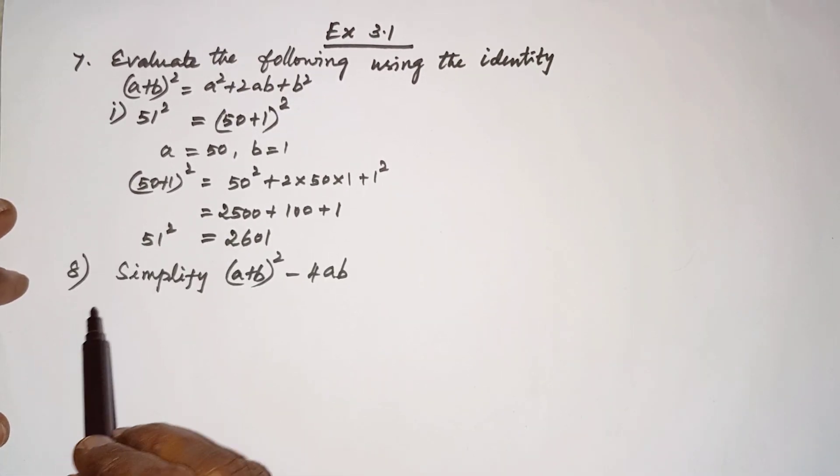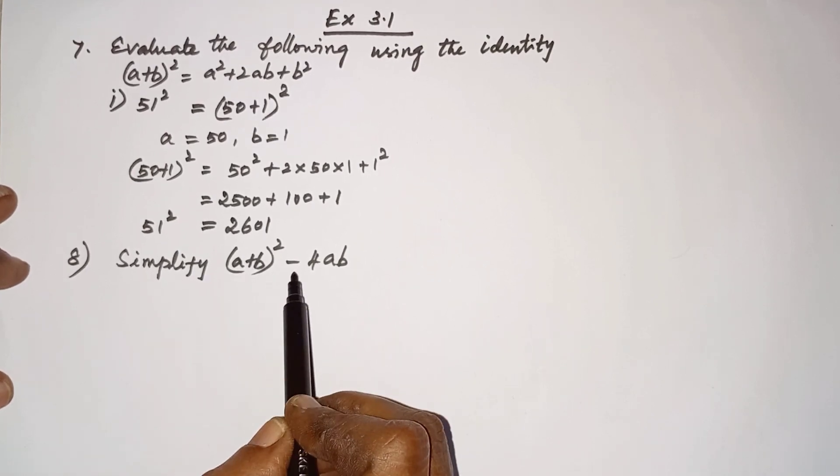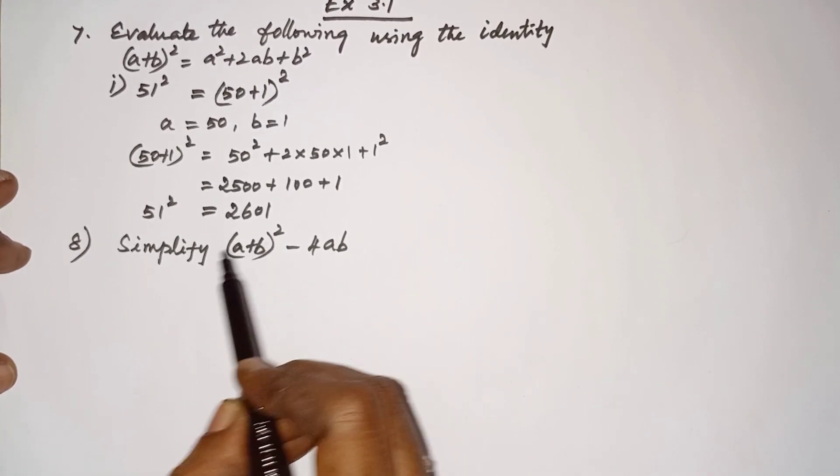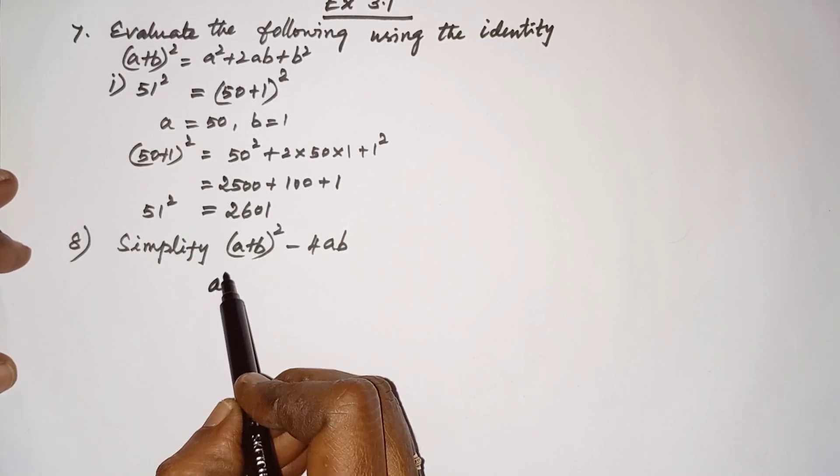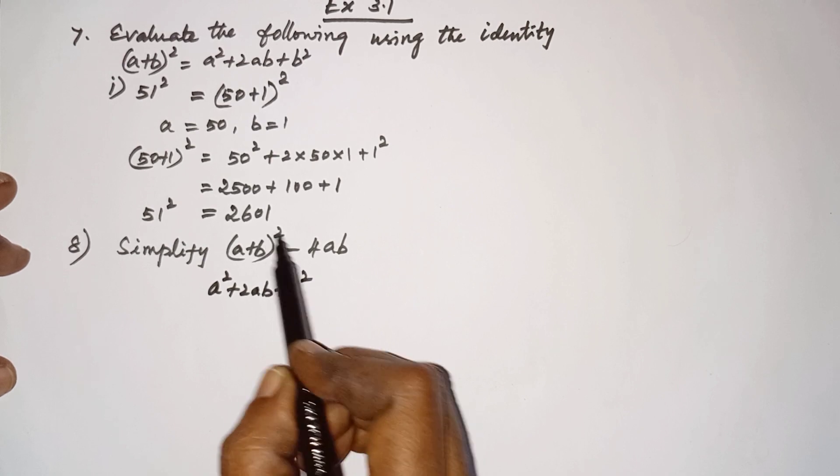Next, the eighth sum is simplify (a + b)² - 4ab. (a + b)² - we know the formula is (a + b)² = a² + 2ab + b². Then you...